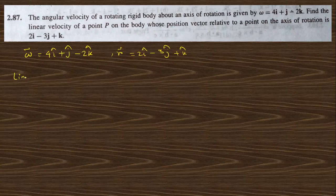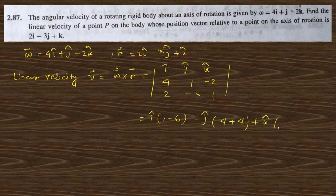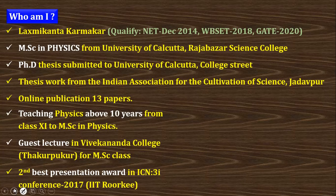The linear velocity v = ω cross r. Using the determinant with i, j, k: ω = (4, 1, −2) and r = (2, −3, 1). Expanding: i cap(1·1 − (−2)·(−3)) − j cap(4·1 − (−2)·2) + k cap(4·(−3) − 1·2). This gives i cap(1 − 6) − j cap(4 + 4) + k cap(−12 − 2) = −5i cap − 8j cap − 12k cap.